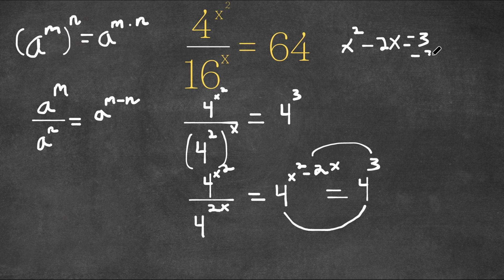So now if I subtract 3 on both sides, I get x squared minus 2x minus 3 is equal to 0. So now as you see, we have a simple quadratic equation. So I'm actually going to plug this into the quadratic formula.